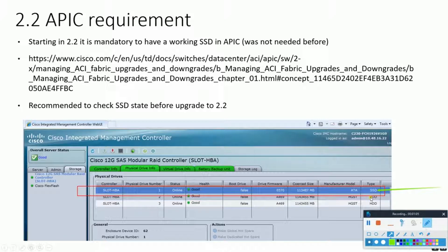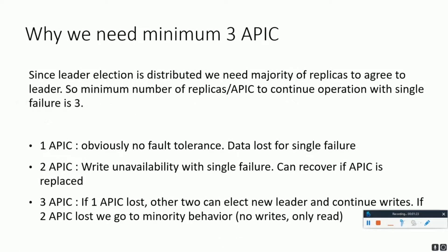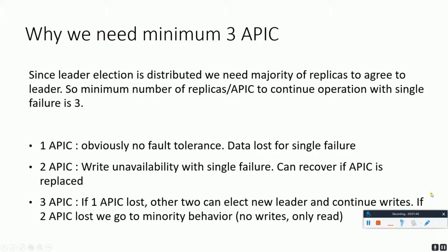This is what we need for the APIC controller running version 2.2 or beyond. Now let's understand why we need three APIC controllers. Since the ACI fabric is a data center solution, redundancy is crucial — anything without it is a big no. The minimum number of APICs has to be at least two, but ideally three. The APIC software design states that if just one operational APIC is left, the fabric would go into read-only mode.